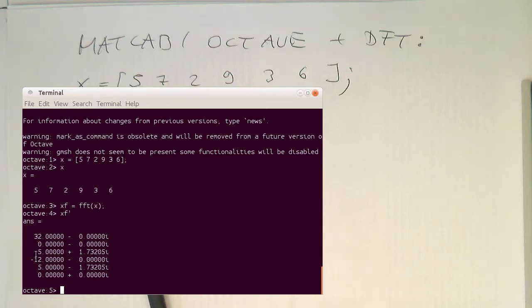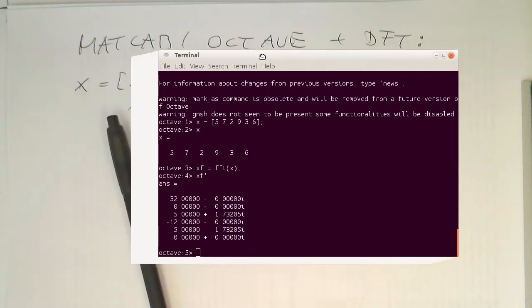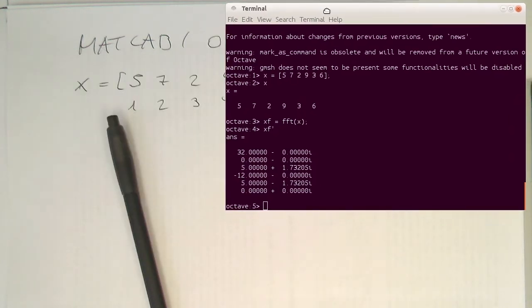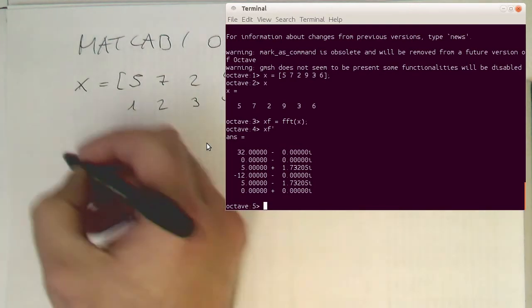So we see already here that this 0 corresponds to this 0 here and the 5 to this one here. So let's just write this down here on our sheet of paper. And maybe we can move this terminal on the side here and we can still see that.